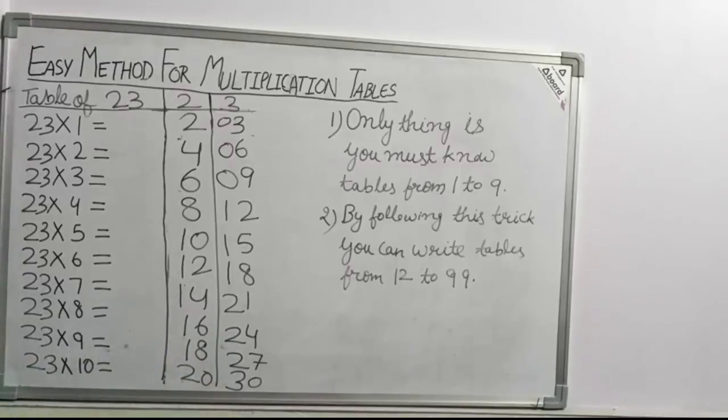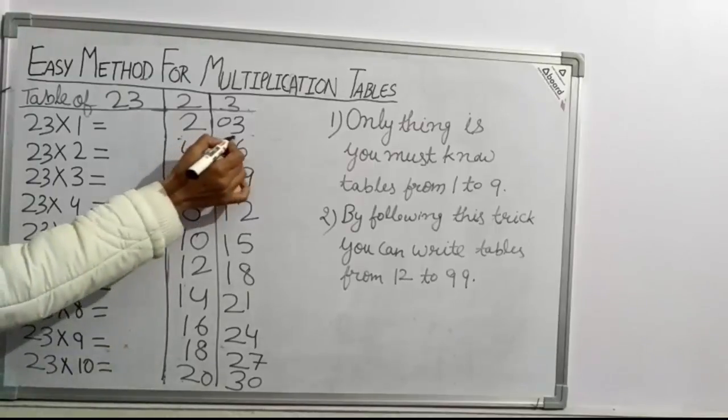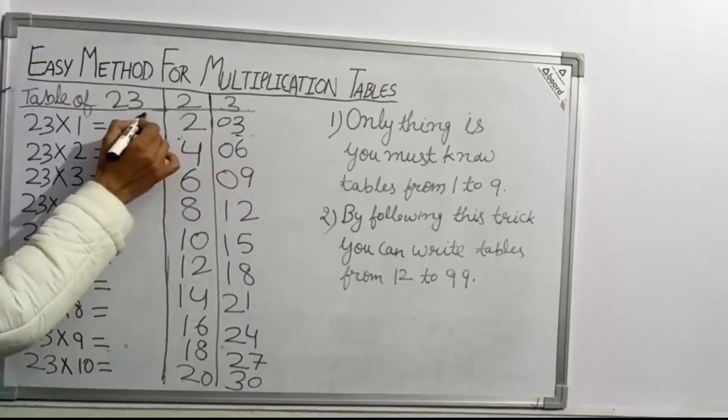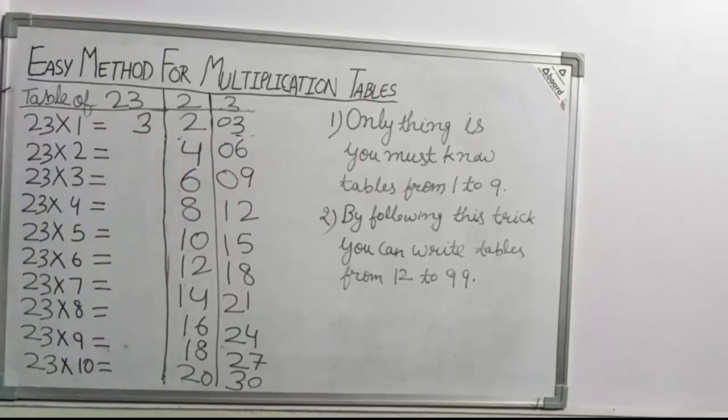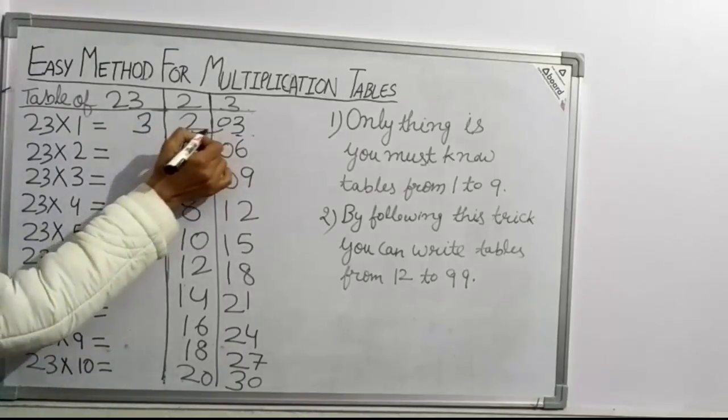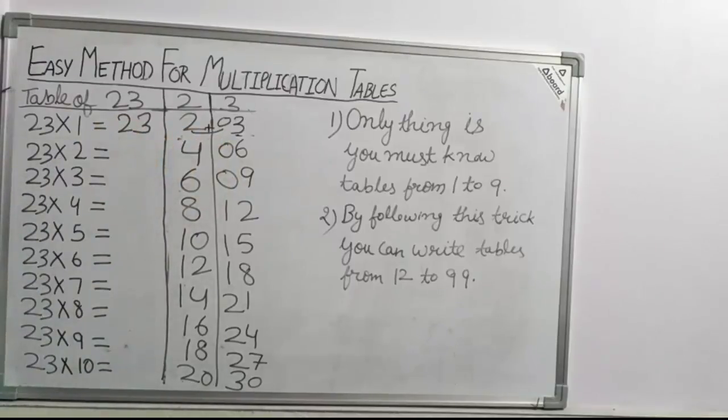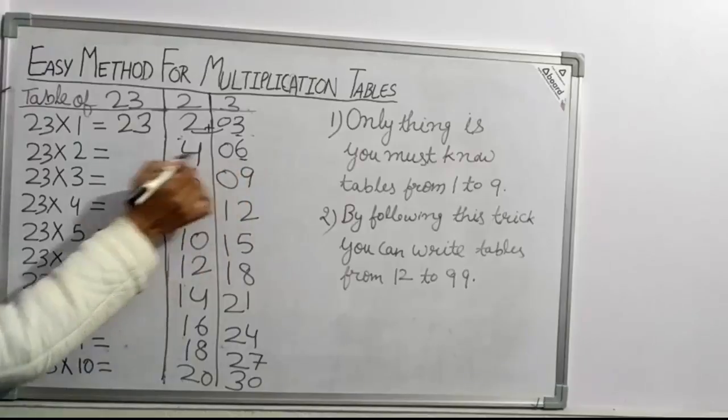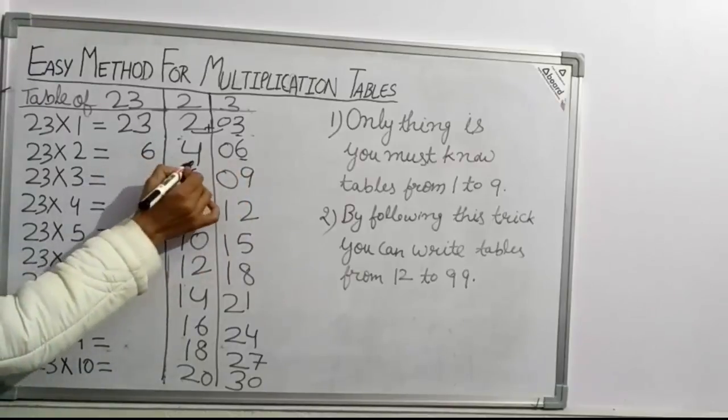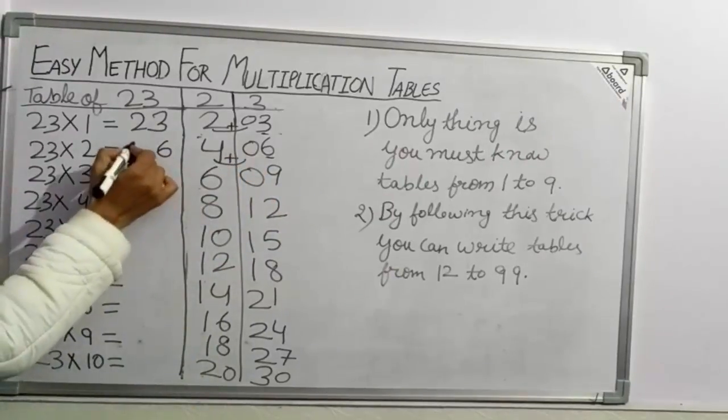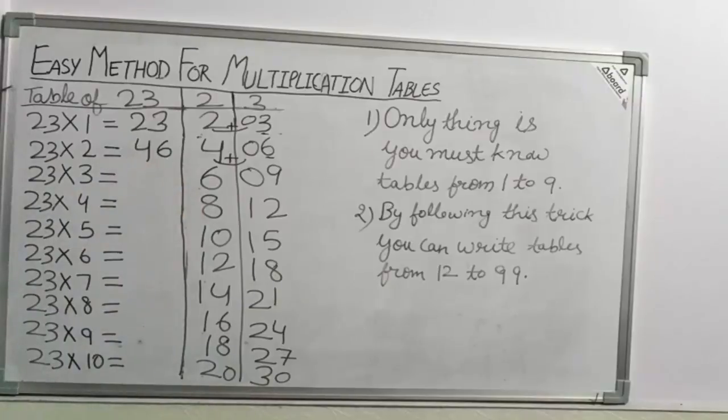Now following the same trick, we will take unit place of table 3 as it is. This is 3. Unit place of table 3 we will take as it is. Now 2 plus 0, 2 plus 0 is 2. 23×1 = 23. 6 as it is. 4 plus 0, 4 plus 0 is 4. 23×2 = 46.